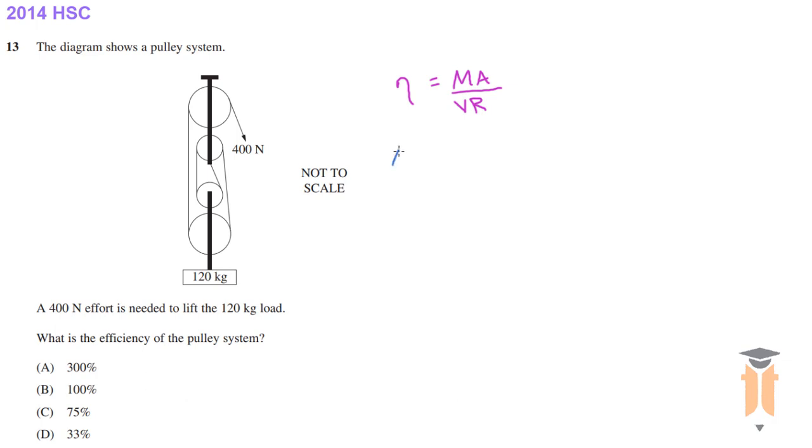We can figure out the mechanical advantage because mechanical advantage equals load over the effort. Our load is 120 kilograms, which converts to 1200 newtons, over the effort which is 400 newtons. That gives us a mechanical advantage of 3.